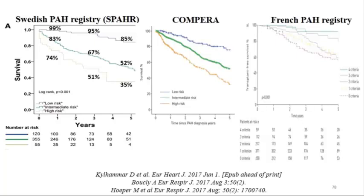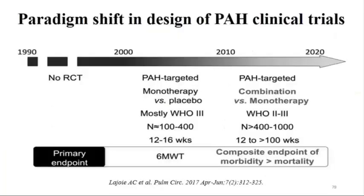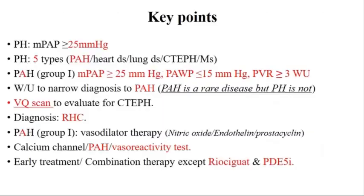It's difficult to give a prognosis on the first visit without seeing the response to treatment. Clinical trials now use more patients, more specific endpoints such as clinical deterioration, need for transplant, and need to start parenteral therapy—rather than just six-minute walk distance in isolation. Trials are using more combination therapy with longer duration, up from 12-16 weeks to up to 100 weeks.